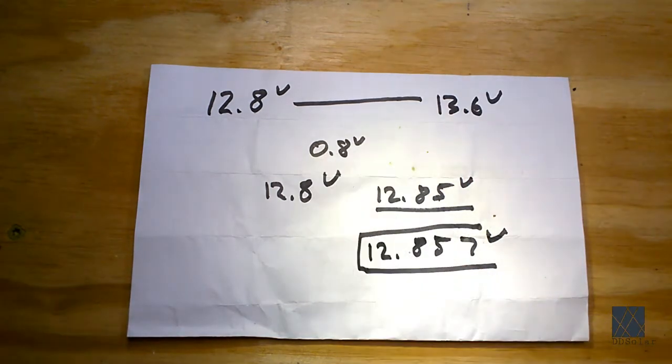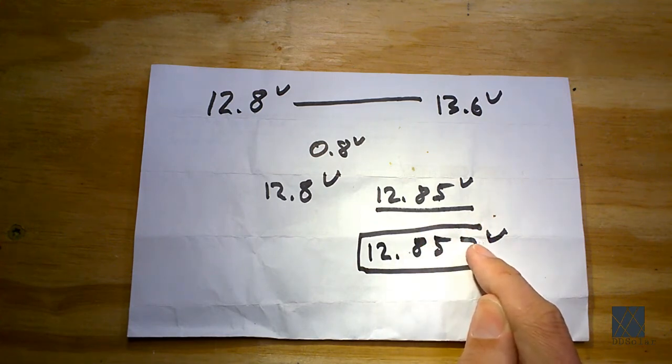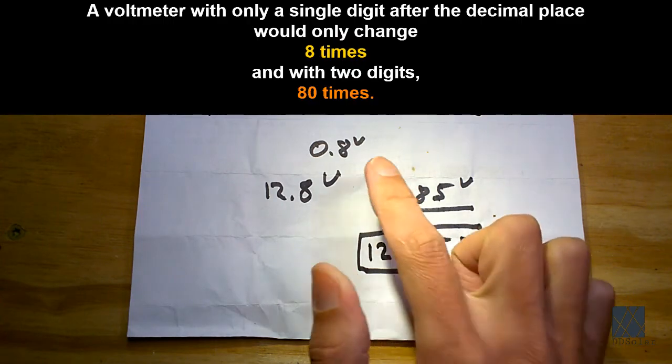With a millivolt voltmeter this side of the display on this side of the decimal place has to change 800 times to represent 0.8 volts. So that's 800 millivolts. 0.8 volts is 800 millivolts.